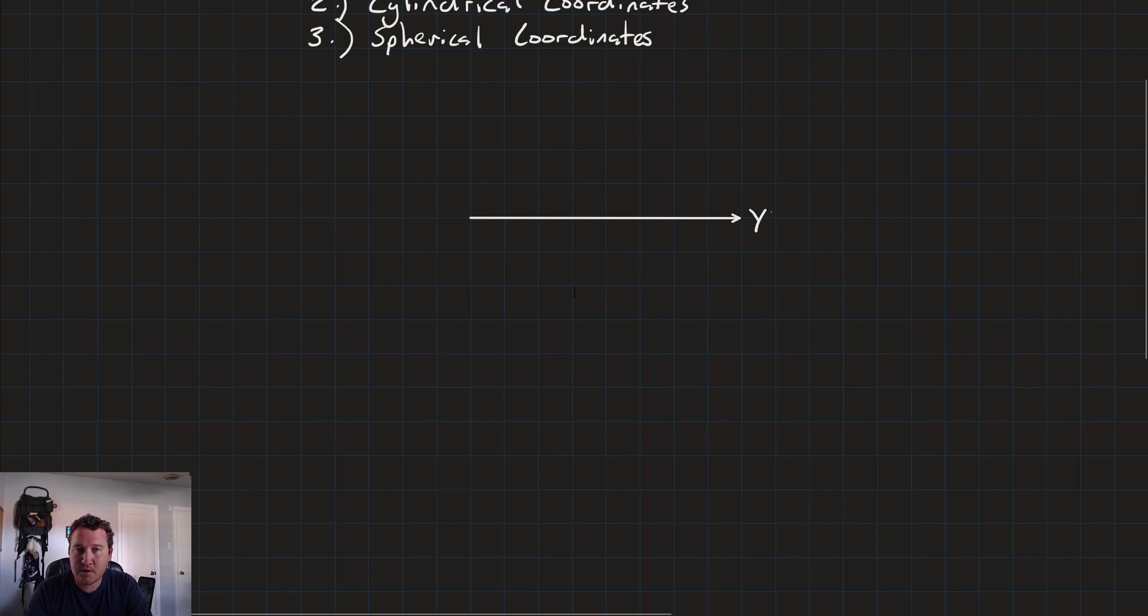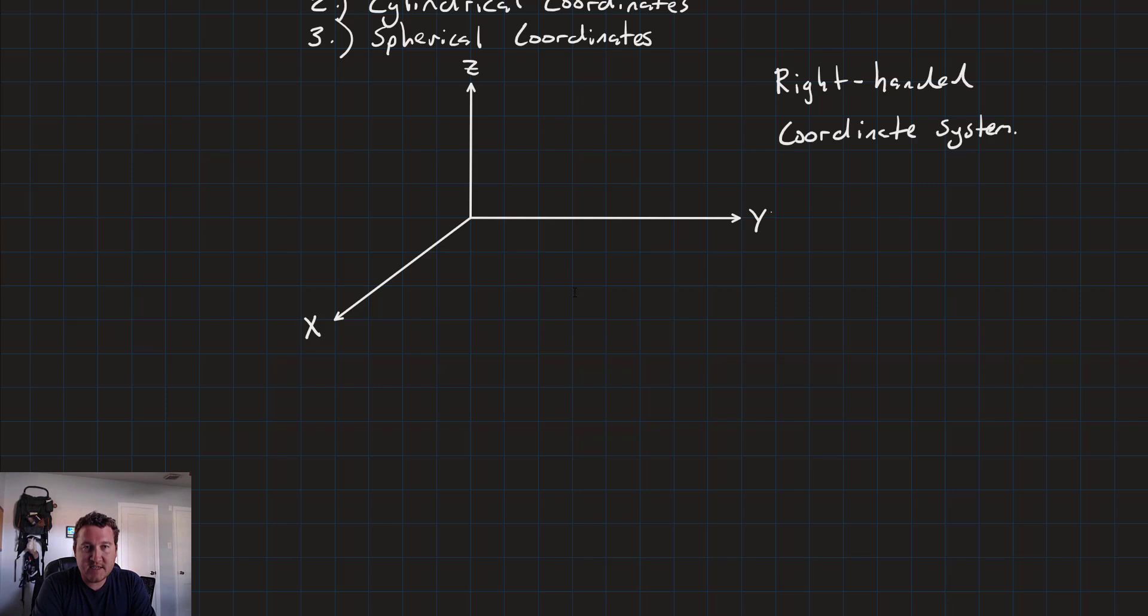Now, this might seem counterintuitive, but we'll talk about why that is in just a second. Next up is the x-axis, down here pointing off to the diagonal. And finally, we have the z-axis, which points straight up.